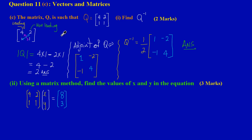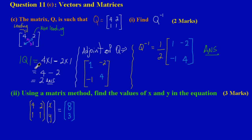Welcome back to Will Edutech. In the previous exercise we looked at finding the inverse of matrix Q, equal to [4,2,1,1], worth two marks. First we found the determinant of Q, which is 2, then the adjoint of Q: [1,-2,-1,4]. To find the inverse of Q we placed 1 over the determinant and multiplied by the adjoint, giving Q inverse = ½ × [1,-2,-1,4]. If you're unsure about that answer, you can watch the previous video in the playlist.